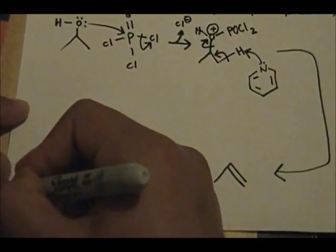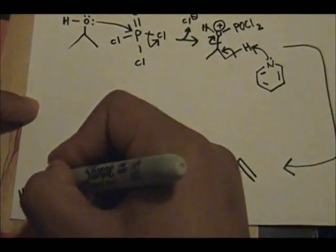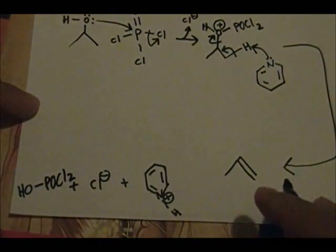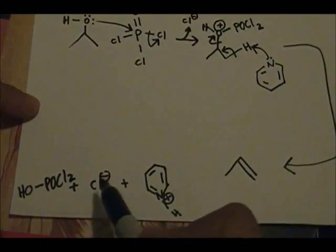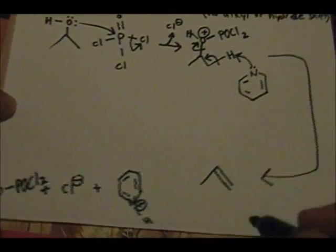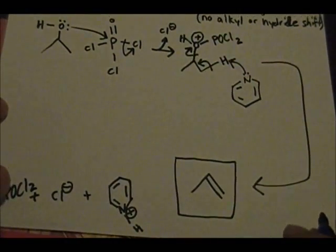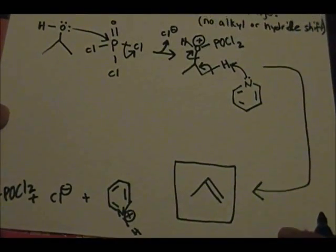You still have the leaving group, the OH-POCl2. So you have this plus this plus this. And this is our major product. And there you have it.